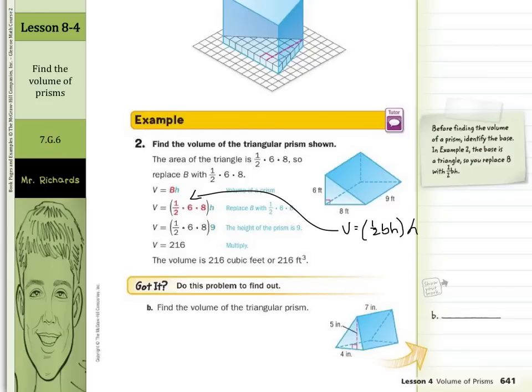And so when you see this ½ times 6 times 8, it's because they're taking ½ times the - they call the base 6, the height 8, and then times the height of the prism was 9. Multiply those together to get 216.